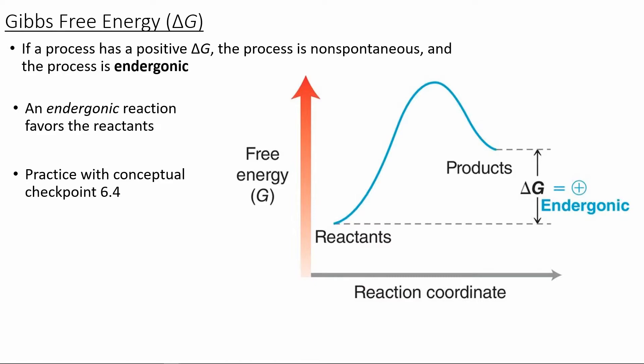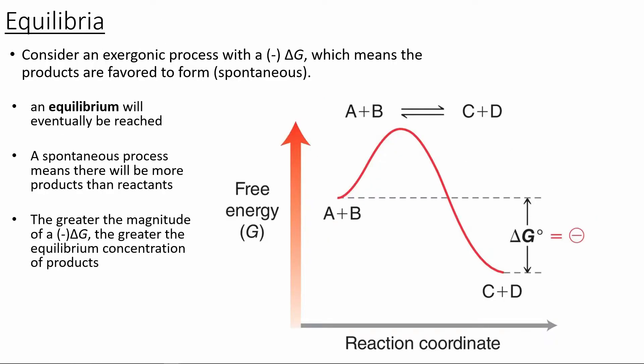If the process has a Gibbs free energy that's positive, then the products will be higher in energy than the reactants, and this will be an endergonic reaction that favors the reactants — we would need a large energy input to get over this barrier to form the products. This leads us into equilibrium, which will occur when we have A and B going to C and D in the reverse reaction.